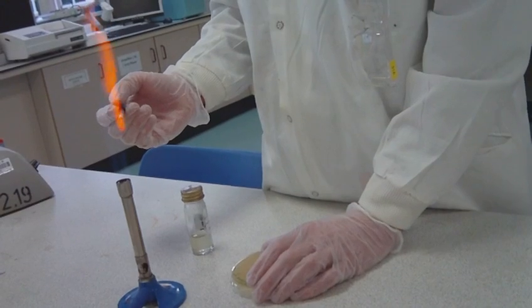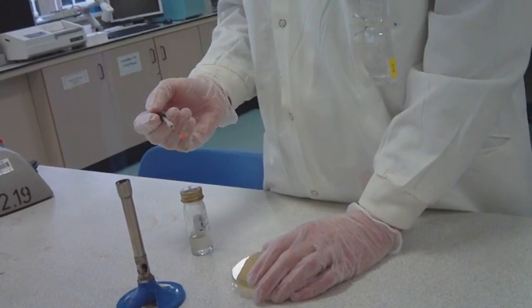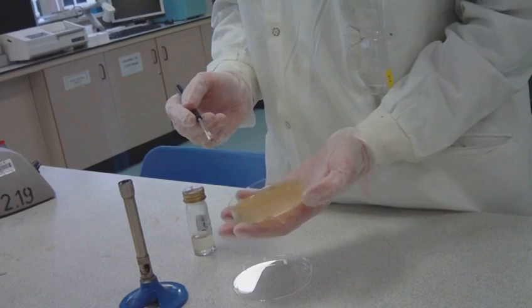Flame the loop again and repeat the process of streaking onto the next quarter of the agar from 3 to 6 o'clock.